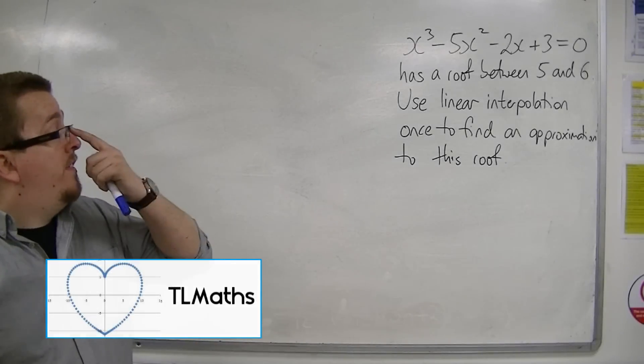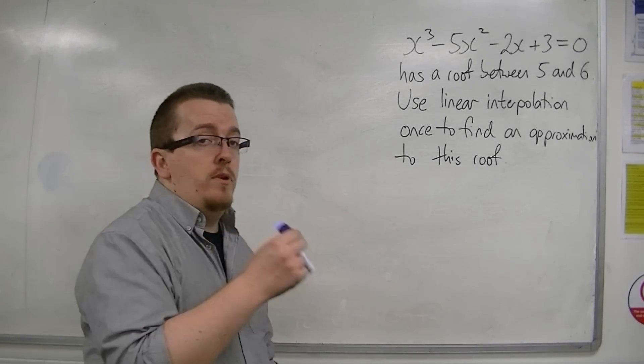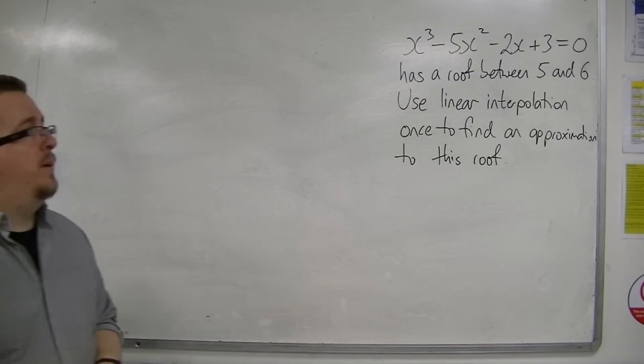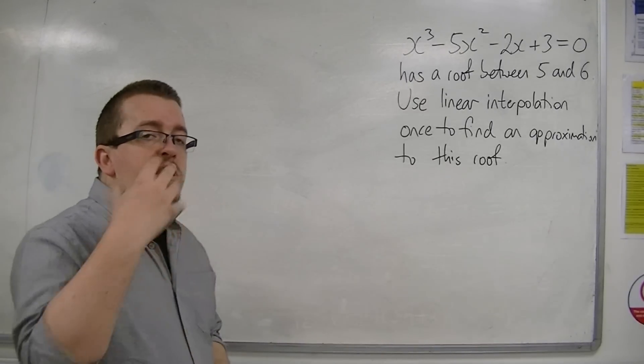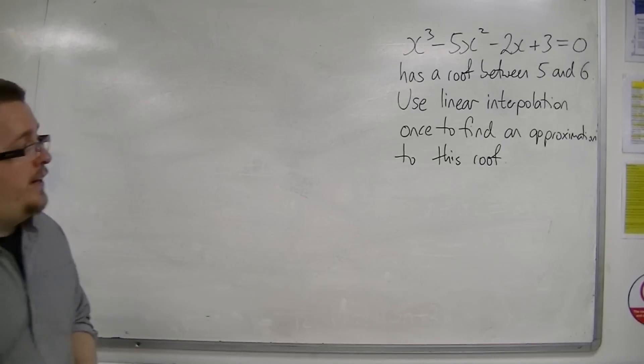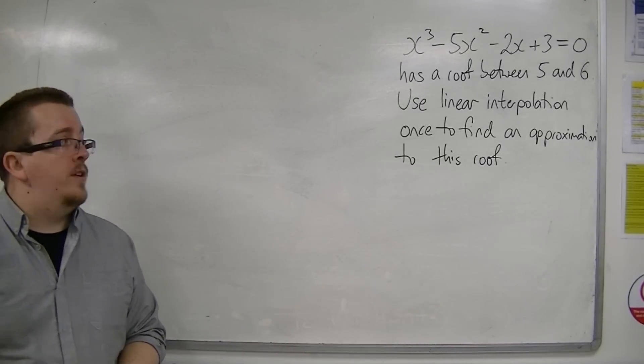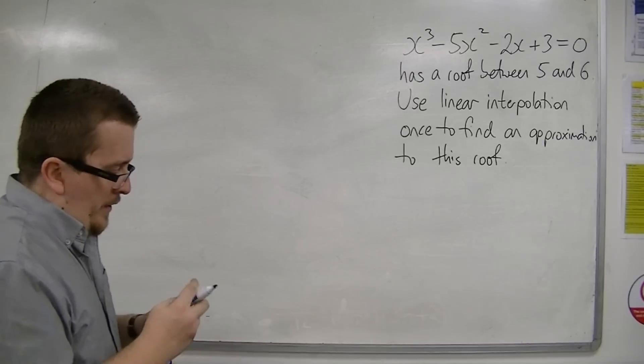Working with the same example that we've used in the previous videos, x cubed minus 5x squared minus 2x plus 3 equals 0, we know that it's got a root between 5 and 6, and we're asked to use linear interpolation once to find an approximation to this root.